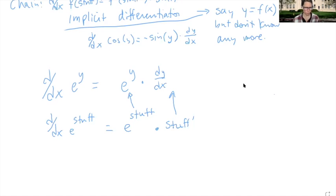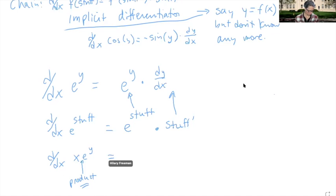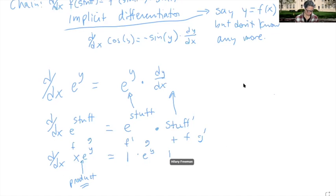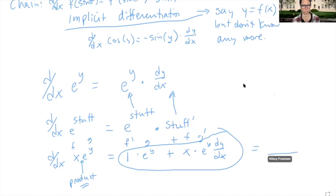For x times e to the y, we have a product with implicit differentiation. So we use F prime G plus F G prime. The derivative of x is 1, copy down e to the y, then copy down x and multiply by G prime. We just figured out G prime — it's e to the y times dy/dx. And then if you had an equation, if that were set equal to something else, you could go ahead and solve for dy/dx.